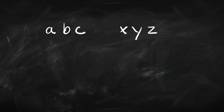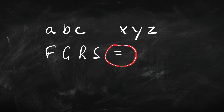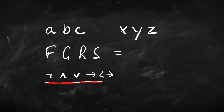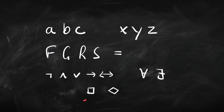Just like in first-order logic, we are going to have names and constants, variables, predicates including the identity predicate, the connectives — not, and, or, if-then, if-and-only-if — the quantifiers for-all and for-some, and we're going to have the modal operators: the box and the diamond.